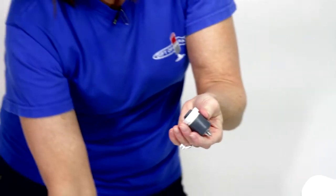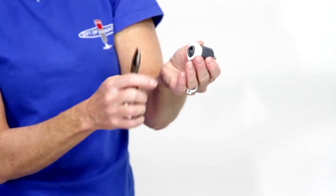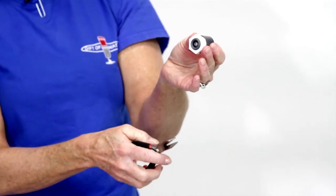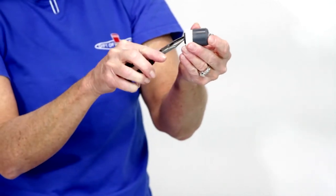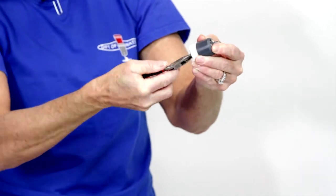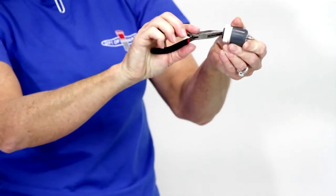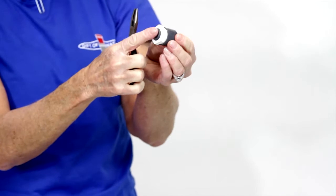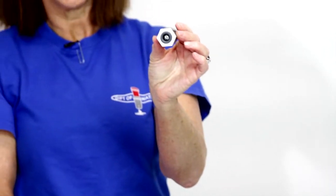You want to make sure that this screw is inside the gray casing. If it's sticking out, it will leak. If you have needle nose pliers, just give it a couple of turns and make sure that screw is within the gray casing.